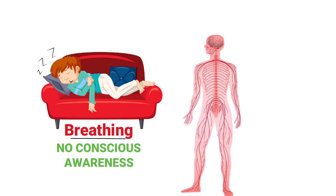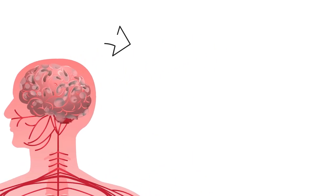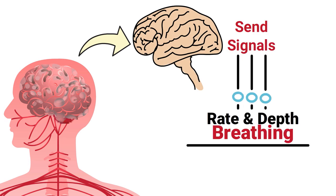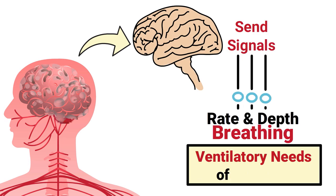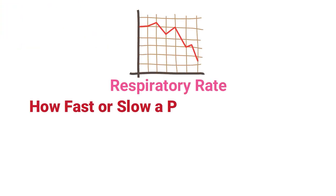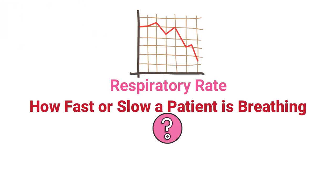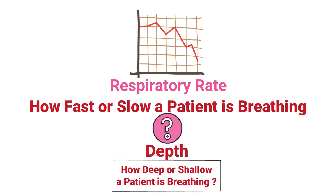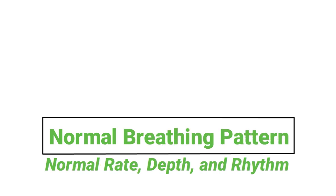Breathing is a phenomenon that occurs automatically with no conscious awareness, thanks to the autonomic nervous system. Structures within the brain send signals that control the rate and depth of breathing to meet the ventilatory needs of the body. Looking at the respiratory rate tells us how fast or slow a patient is breathing, and looking at the depth tells us how deep or shallow a patient is breathing.